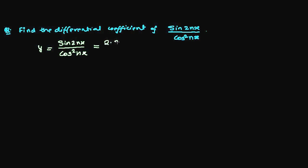So it is 2 times sine nx times cos nx divided by cos square nx. And now what you can do is you can cancel.